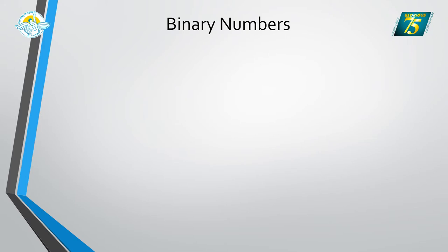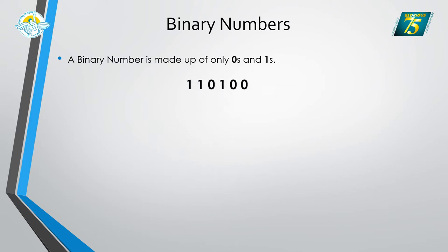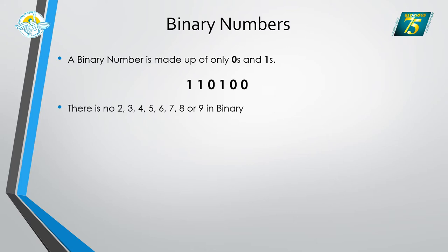Binary numbers, as the name suggests — 'bi' means 2 — are made up of only 0s and 1s. For example, the sequence 1,1,0,1,0,0. When you type any input, the computer converts it into binary form. There is no 2, 3, 4, 5, 6, 7, 8 or 9 in binary — everything is represented as 0s and 1s. For example, if I type the number 7, the computer converts it to binary: 1,1,1. So 111 in binary represents the number 7.